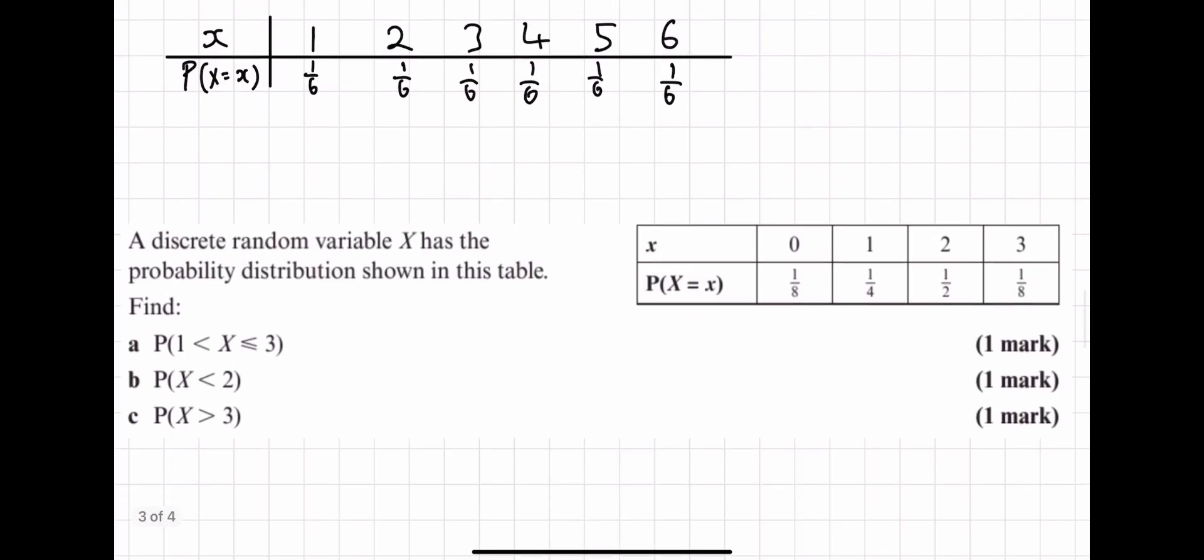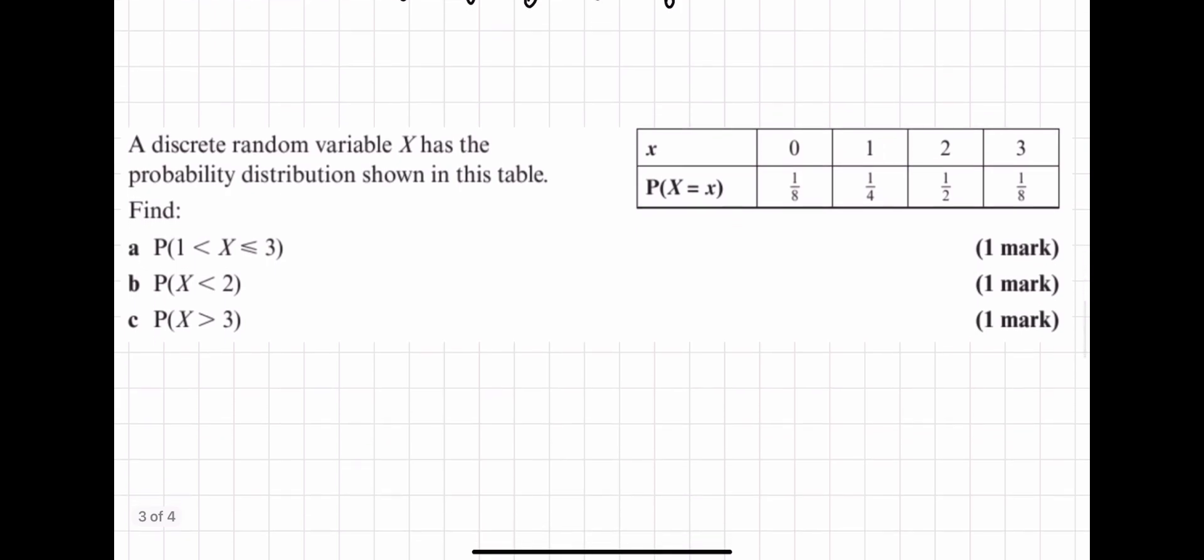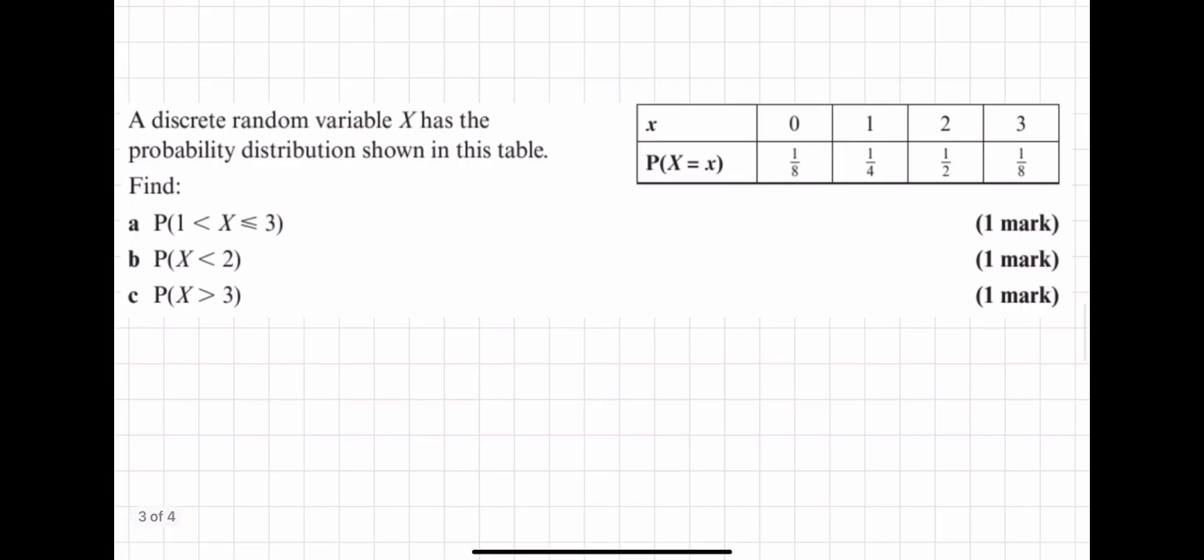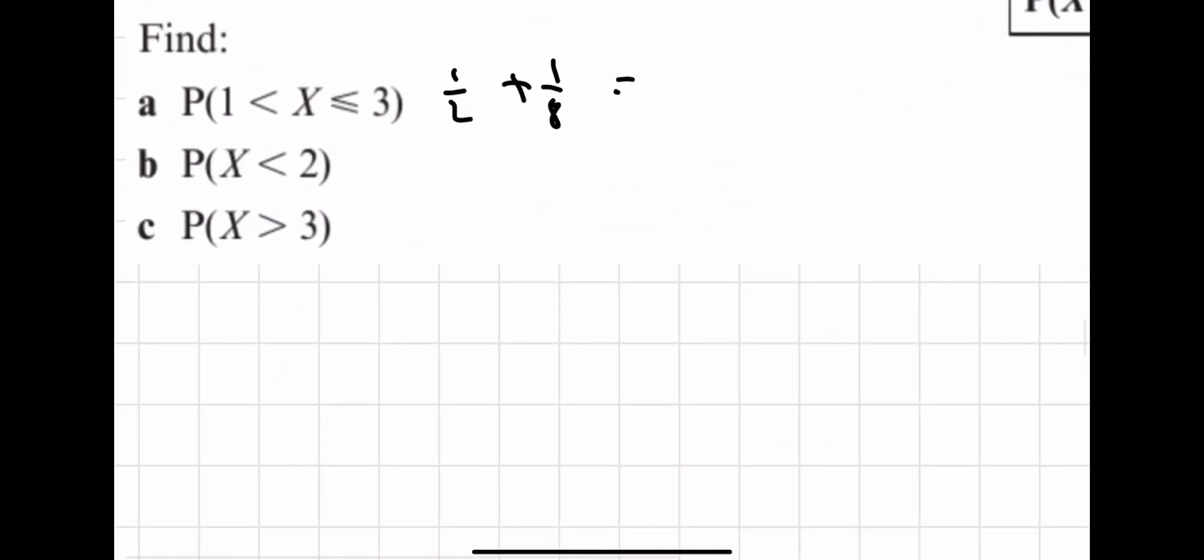Here we have a question. A discrete random variable X has the probability distribution shown in this table. Find the probability that X is between one and three, but not including one. So what that's asking us for is the probability of these two added together. So one-half plus one-eighth. Because this is a calculator course, you can go straight to your calculator and do one-half add one-eighth, which gives you five-eighths.